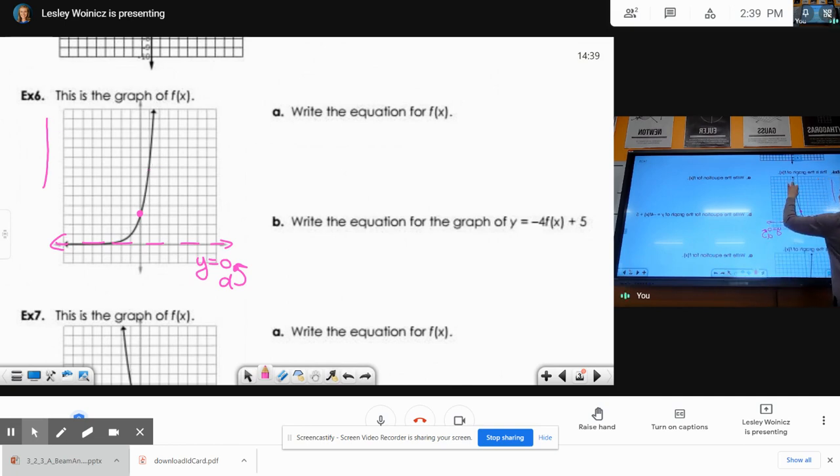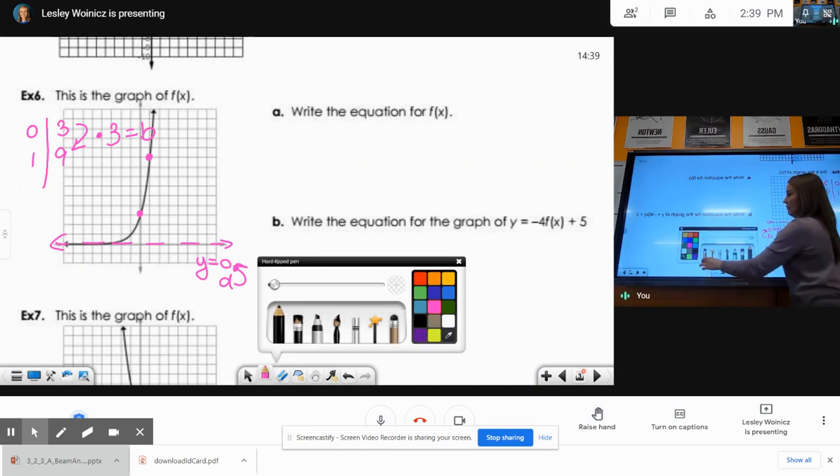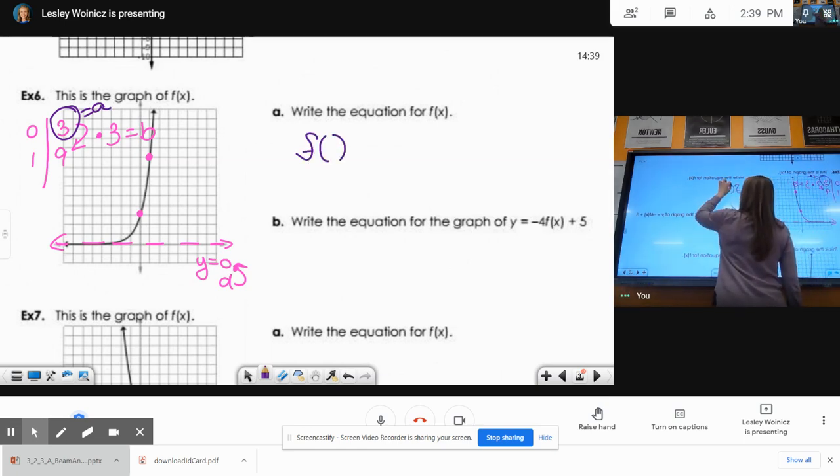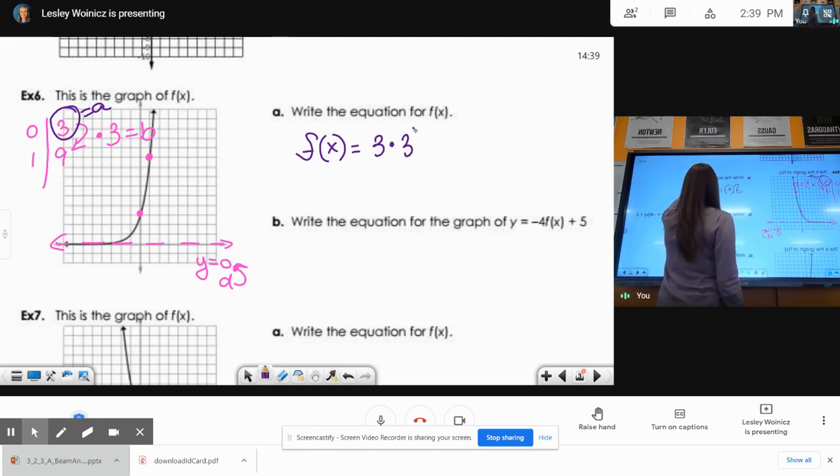Whoa, that's not a 3 point. It's got to be this one. So that is the 0, 3, and that is the 0, 1, 9. So to go from 3 to 9, I'm multiplying by 3, which is my base. And then my a value is also 3. So for f of x, we have 3 times 3 to the x.